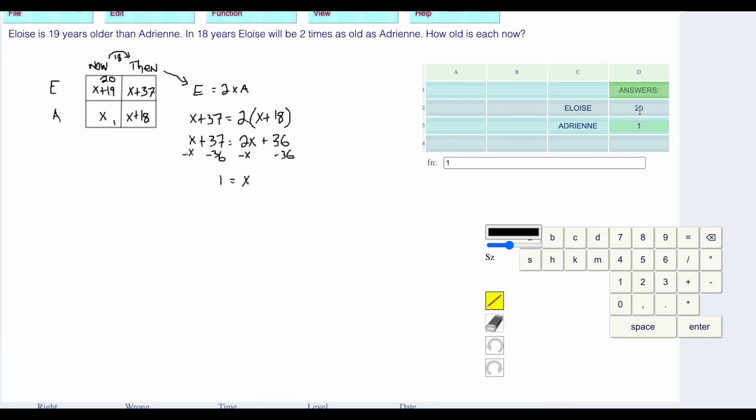That's how you have to put your answers. Beside Eloise, put Eloise's age. Beside Adrian, put Adrian's age. You press enter.